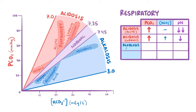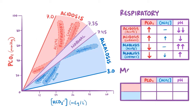Respiratory alkalosis in the acute phase is characterized by low pCO2 and a very high pH. In the chronic phase, renal compensation lowers bicarbonate concentration as well, so the pH is still high but not as high as before. In metabolic acidosis, you get low bicarbonate concentration with instant respiratory compensation, so pCO2 goes down as well, and the pH is low but not as low as without compensation. With metabolic alkalosis, high bicarbonate concentration triggers an instant compensatory increase in pCO2, leading to a high pH but not as high as it would be without compensation.